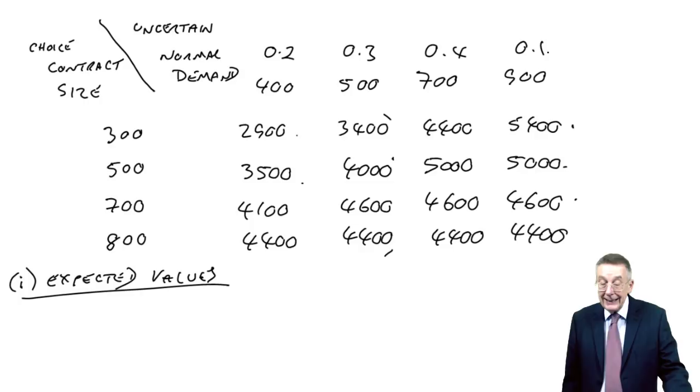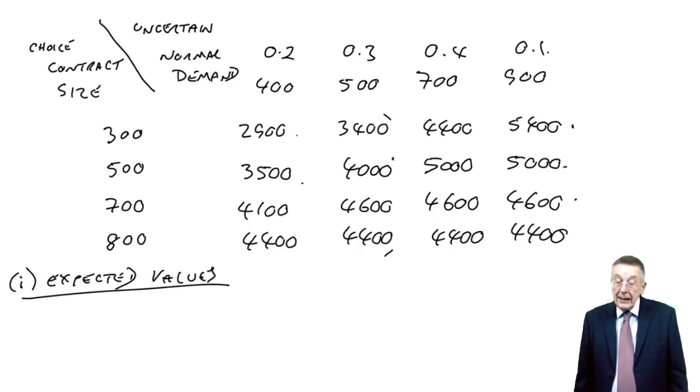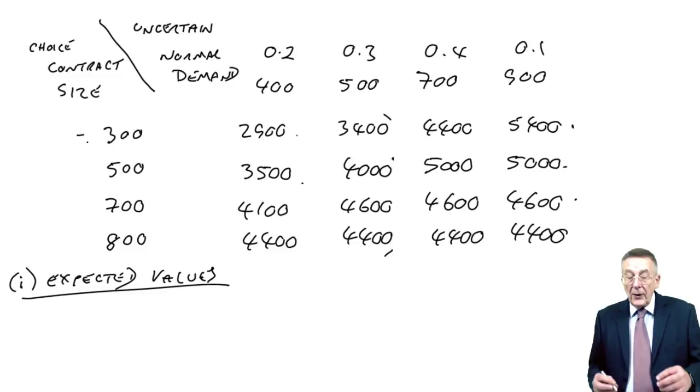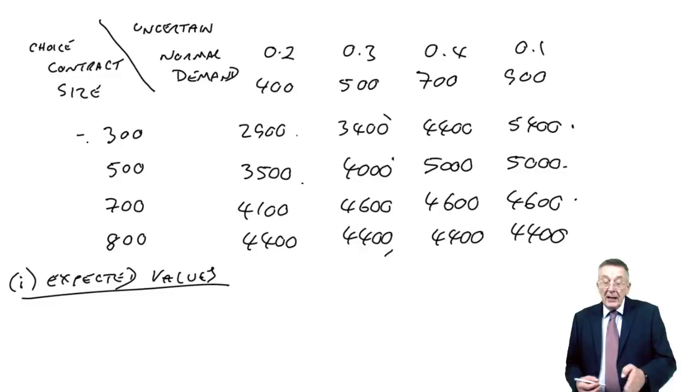It just means, you know, if the probability is 0.2, it means two weeks out of 10, the demand should be 400, three weeks out of 10, it should be 500 and so on. And with that extra information, well, there's a fourth approach. What expected values is, for each of our choices, here contract size, we effectively work out what the average return would be, the average profit.